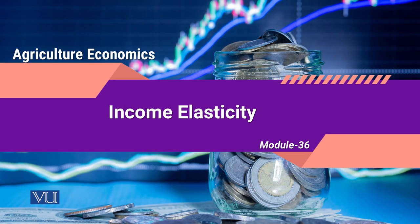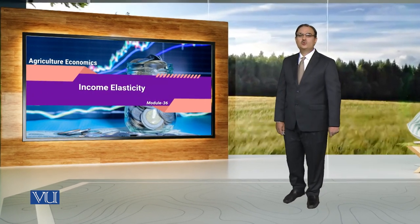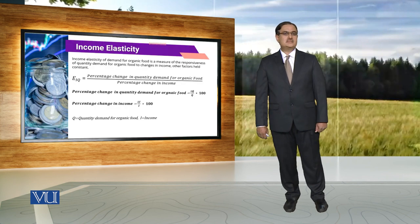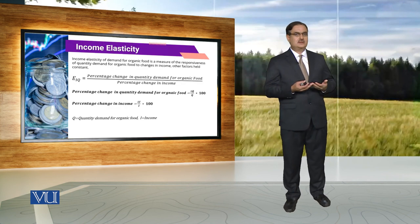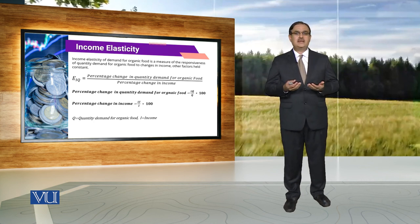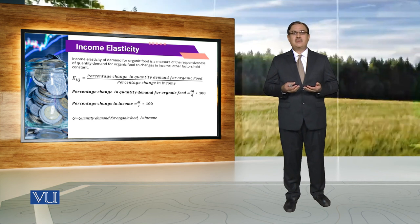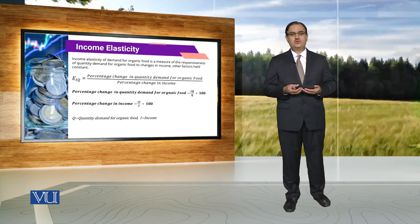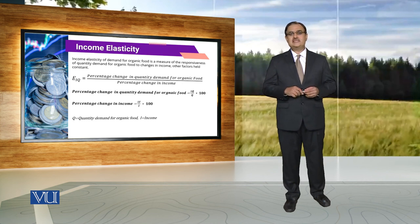Module 36: Income elasticity. In economic theory, income elasticity is a ratio that indicates percentage change in quantity demanded due to percentage change in income. In agricultural economics, if our objective is to measure the income elasticity of demand for organic food, we can measure it by computing the ratio between the percentage change in quantity demanded for organic food and the percentage change in income.